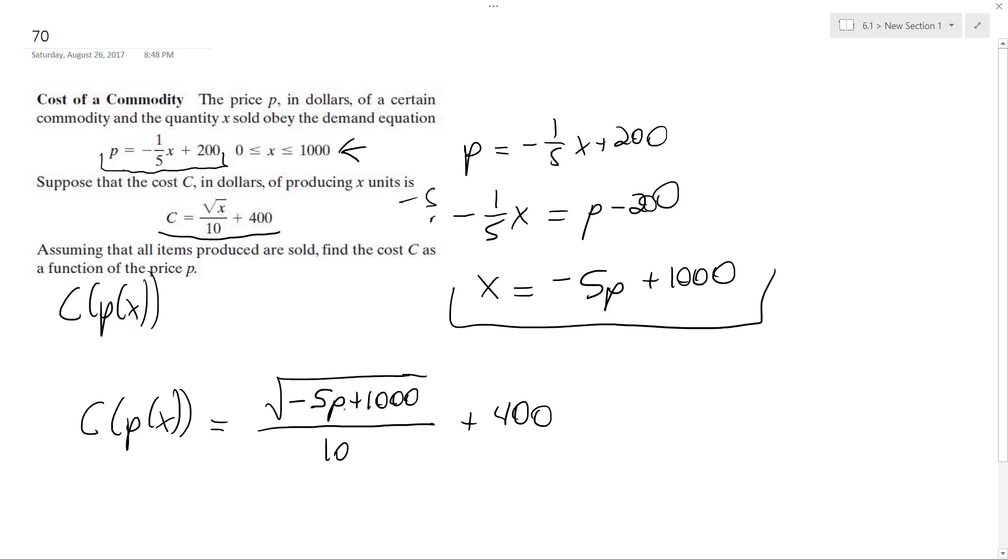I mean you could write 1000 minus 5P either way, but this is the final result of your composite function for the cost of a commodity. Alright, that's how you do it, there you go.